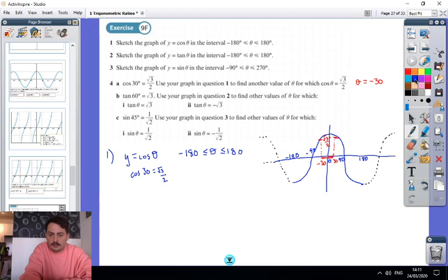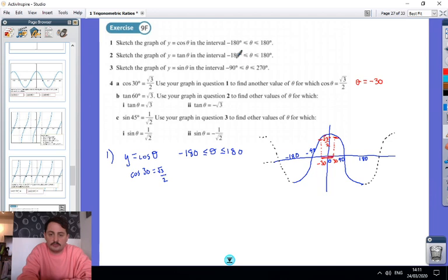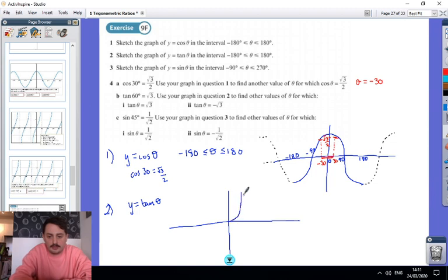I'm going to do question 2 as well, and then I'll leave you to do question 3. So question 2 says sketch the graph of y equals tan θ in the interval -180° to 180°. Now I'm going to draw my axes. We know the tan graph goes from 0, and it goes shooting up like this, and you must draw in that there is an asymptote, and that is at 90. Then we know it comes along like this, and it crosses again at 0.